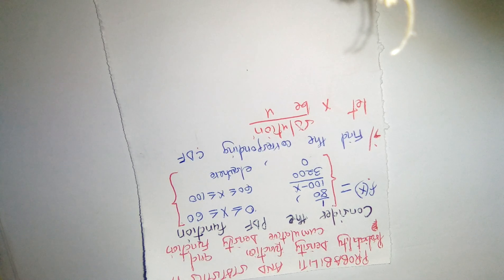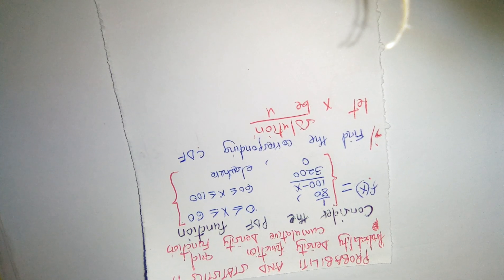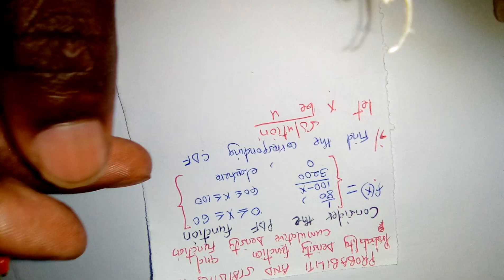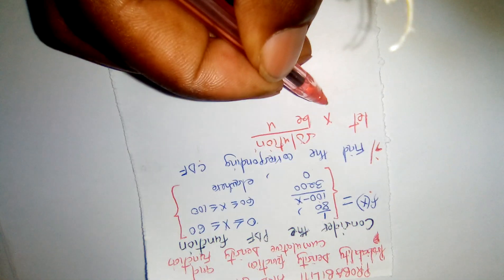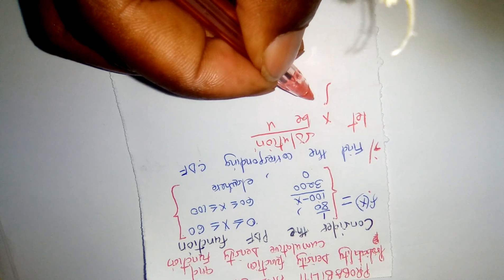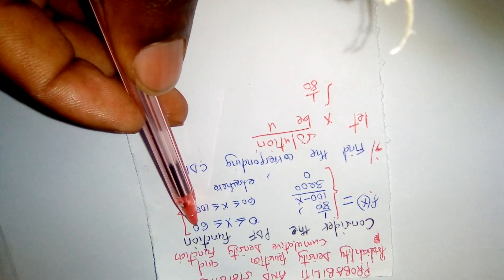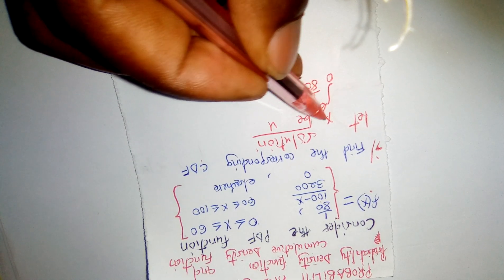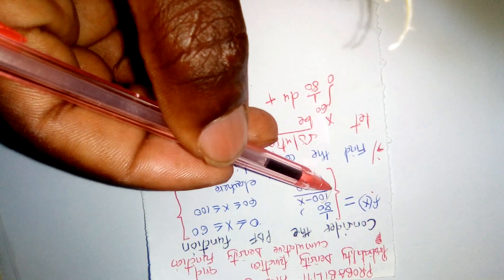The reason for the substitution is that when we reach the point of substituting the upper and lower limits of the integrals, using x directly would cause confusion. So with u substituted for x, I begin with the integral of 1/80 du, with the range from 0 to 60 as the lower and upper limits respectively.